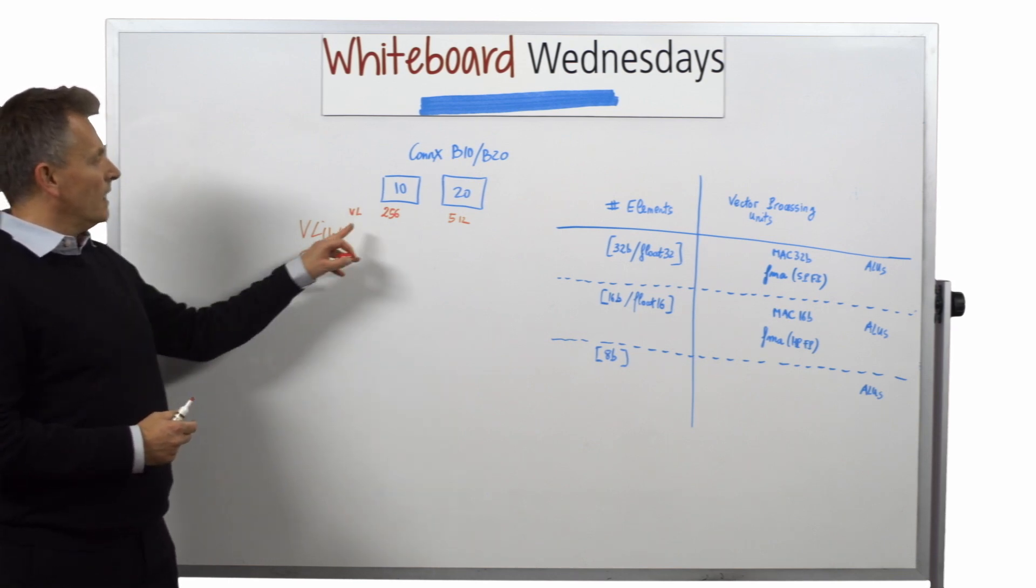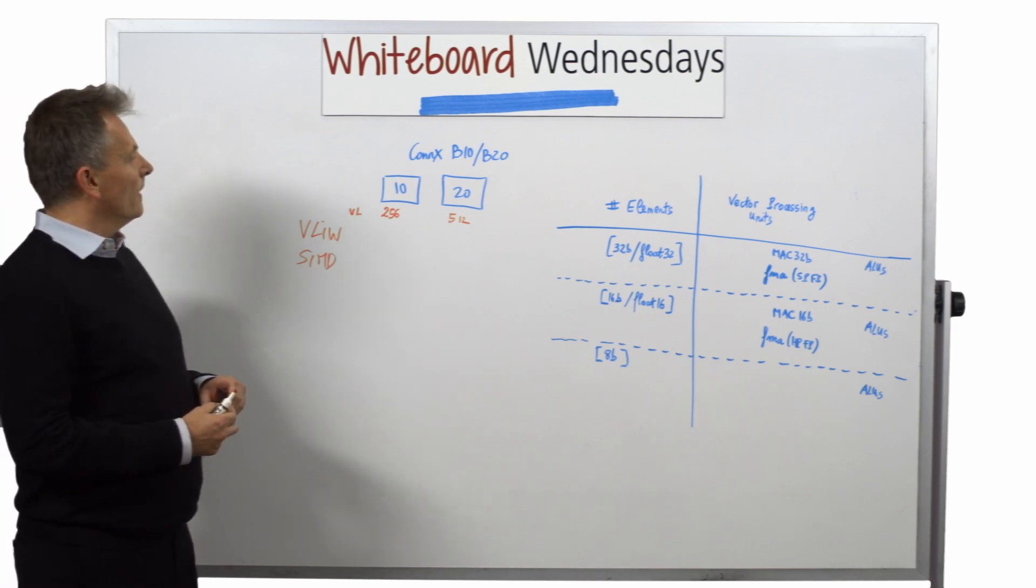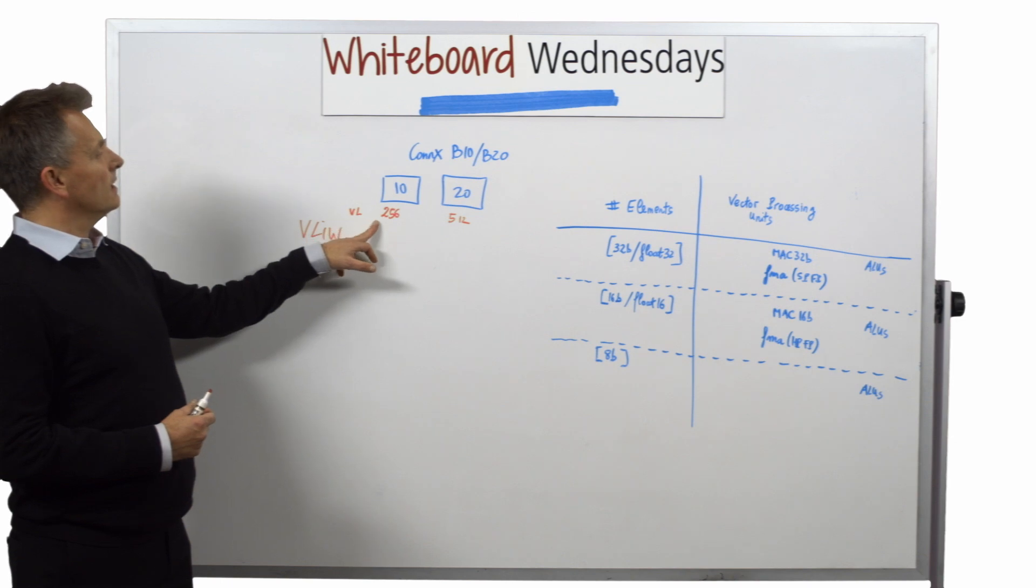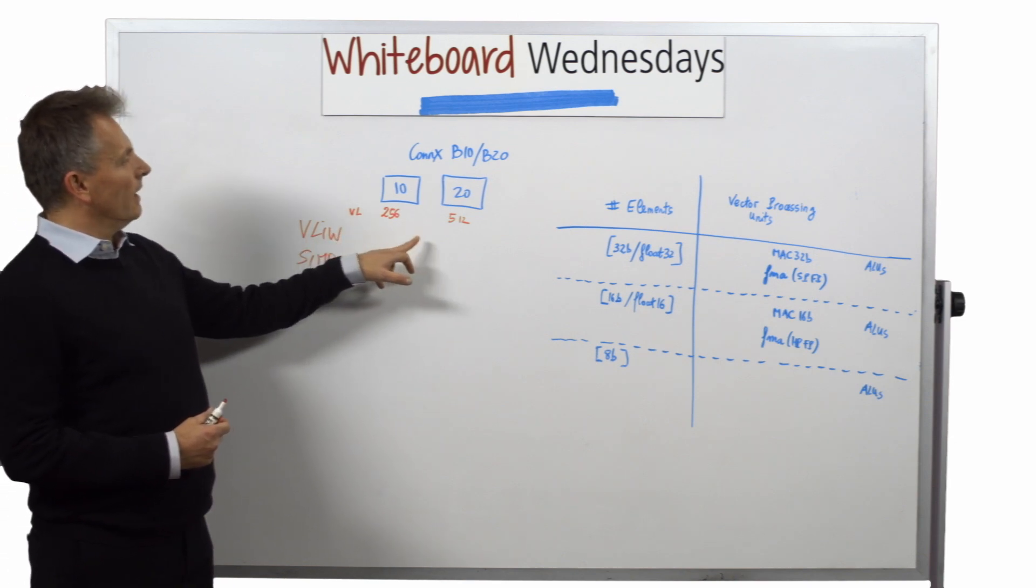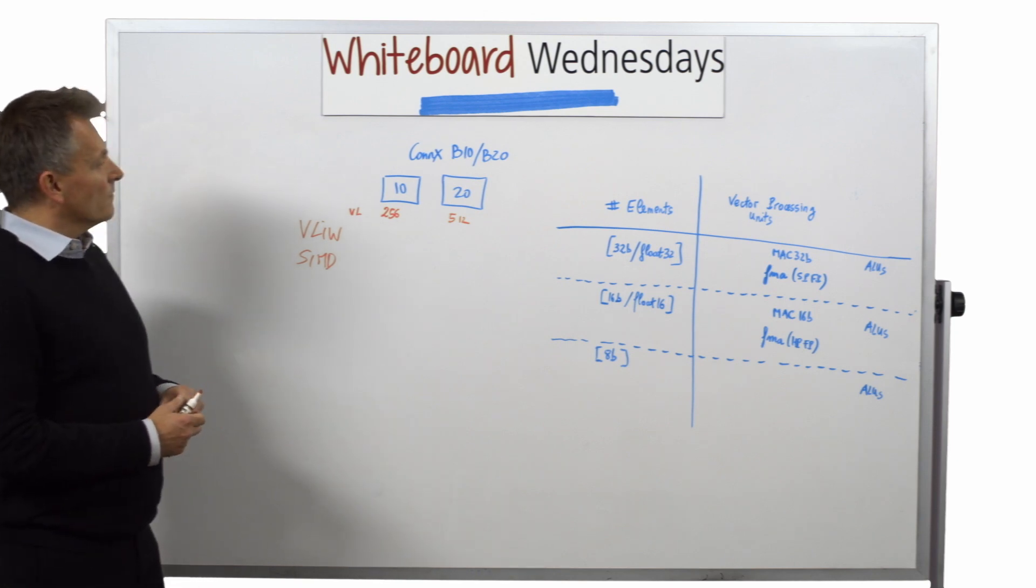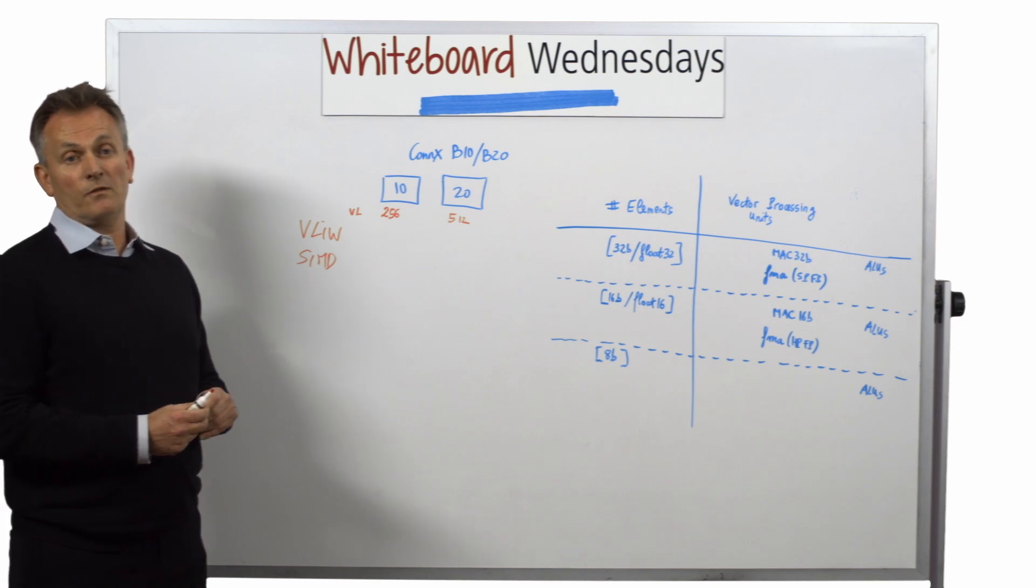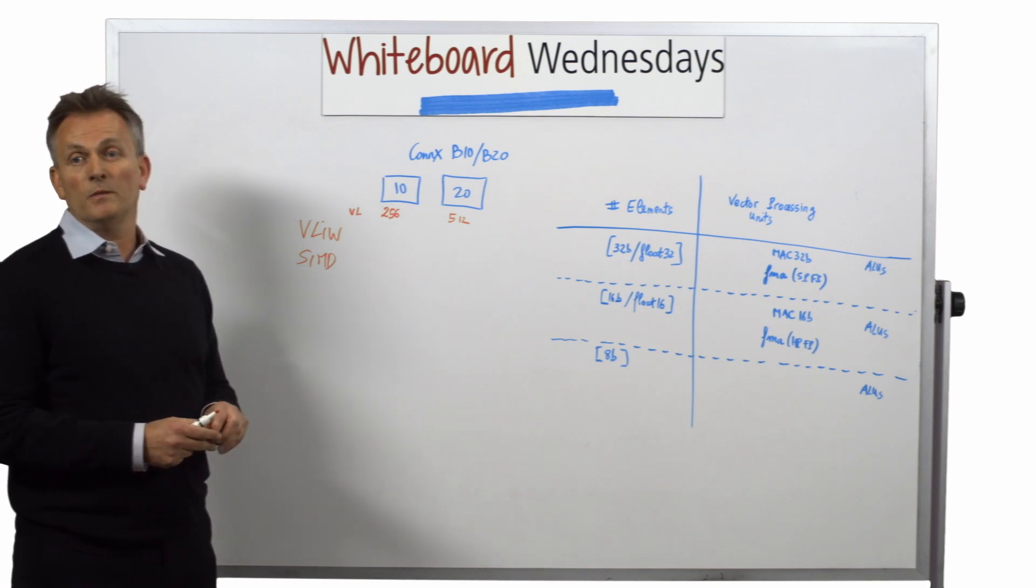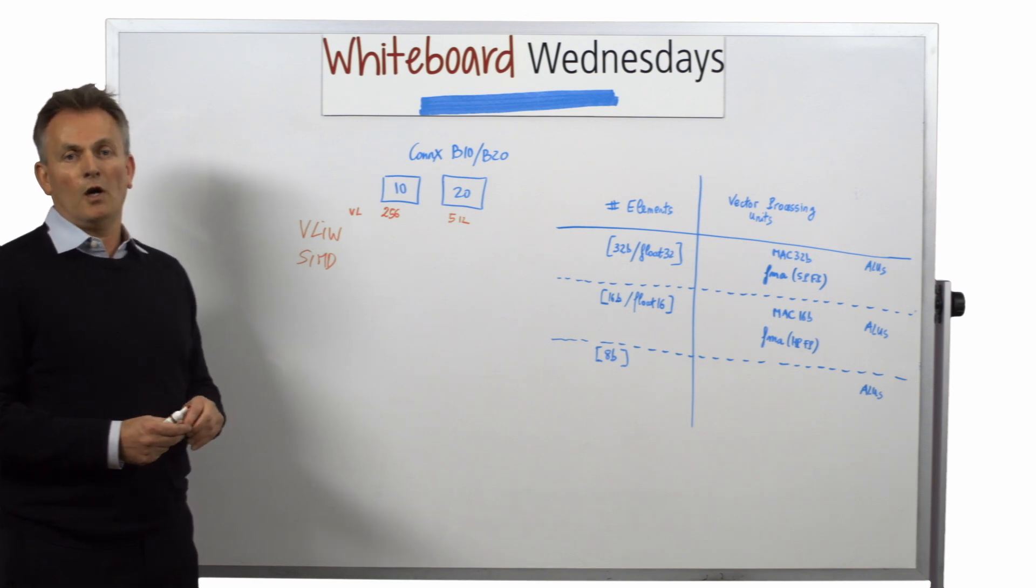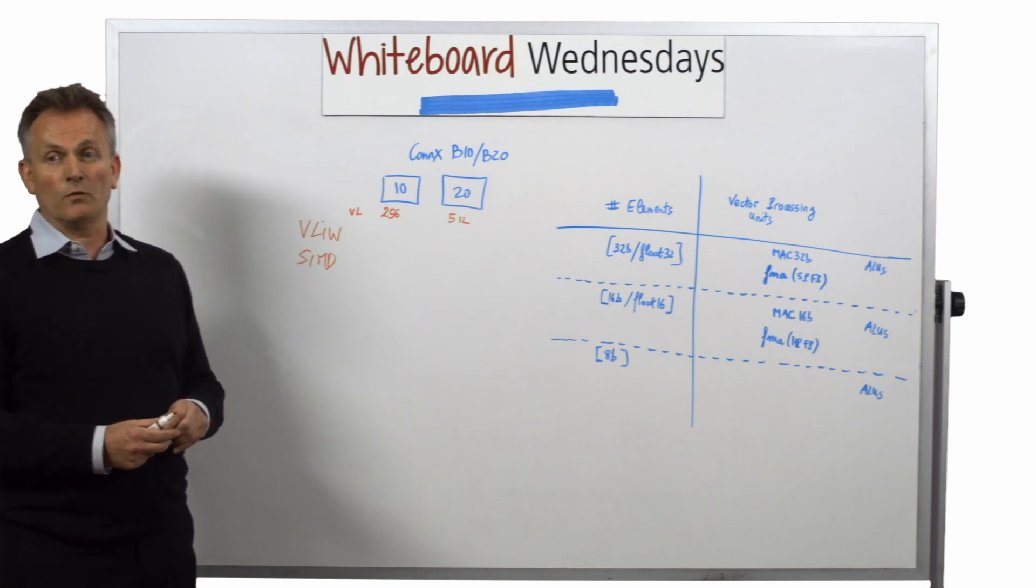And the size of the vector is specific to the B10 and the B20. So the B10 has 256 bit for the vector length and the B20 has 512 bit. This is also the size of the memory interface for the vector data that are coming in and out of the DSP and also the vector cache when it's configured.